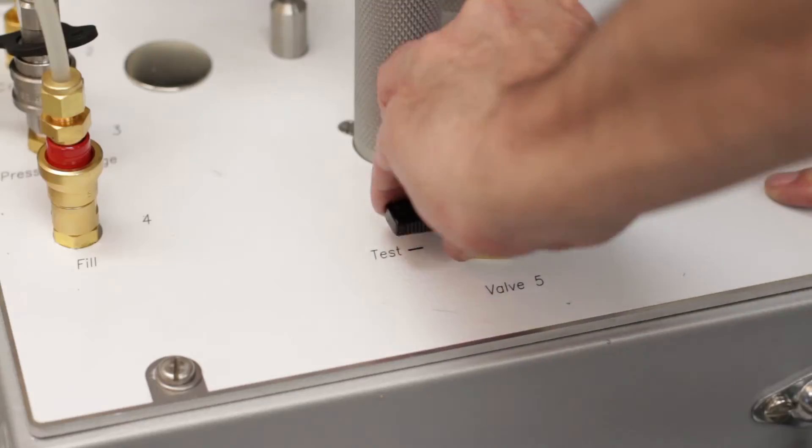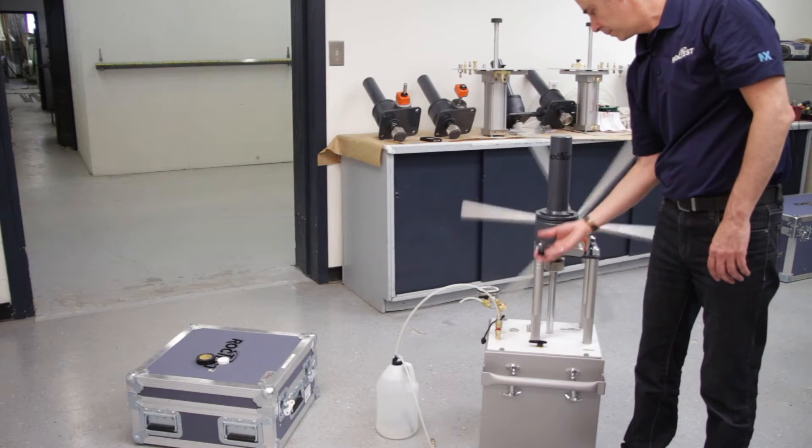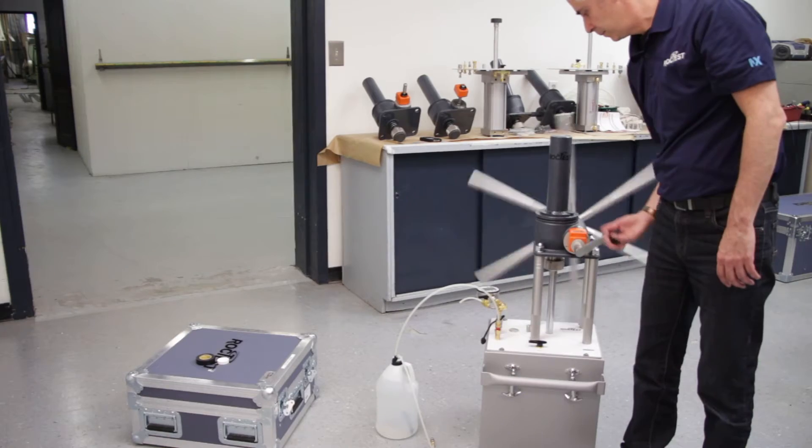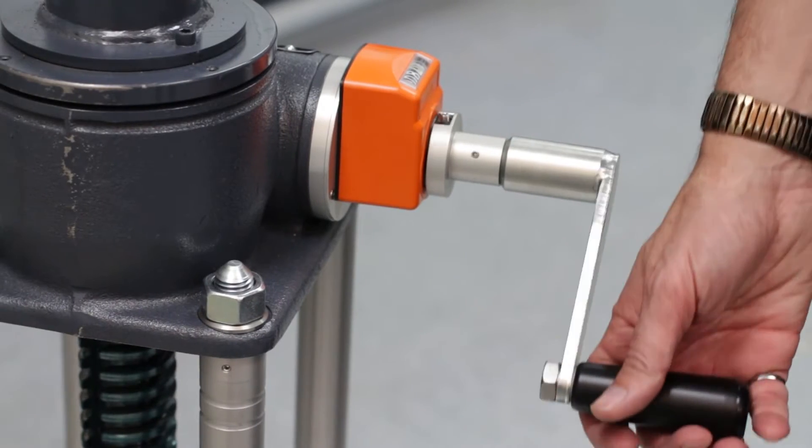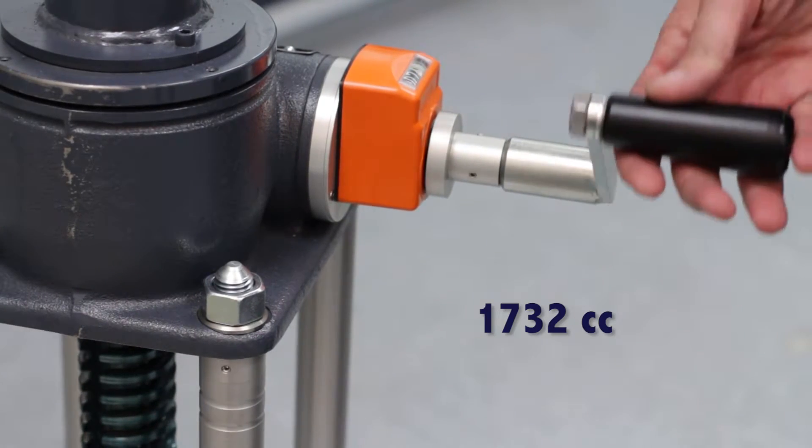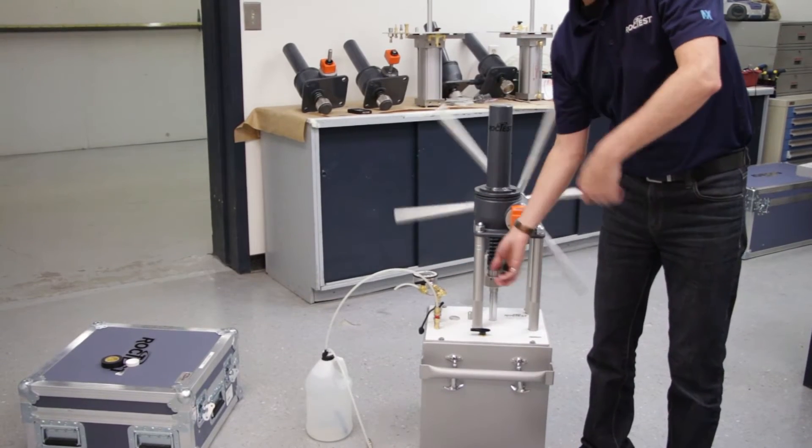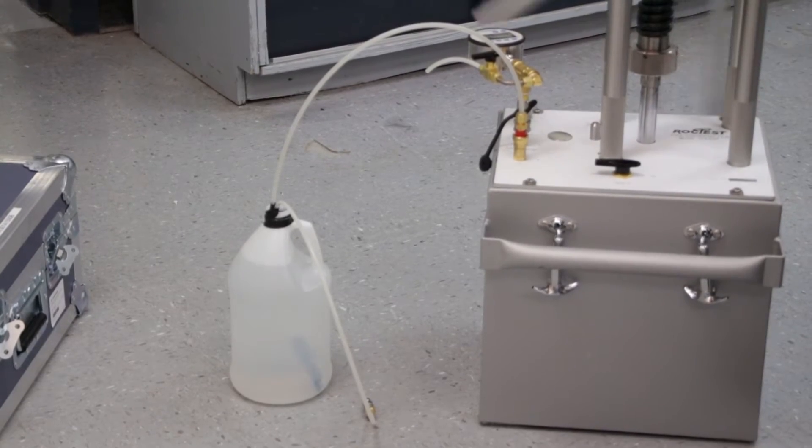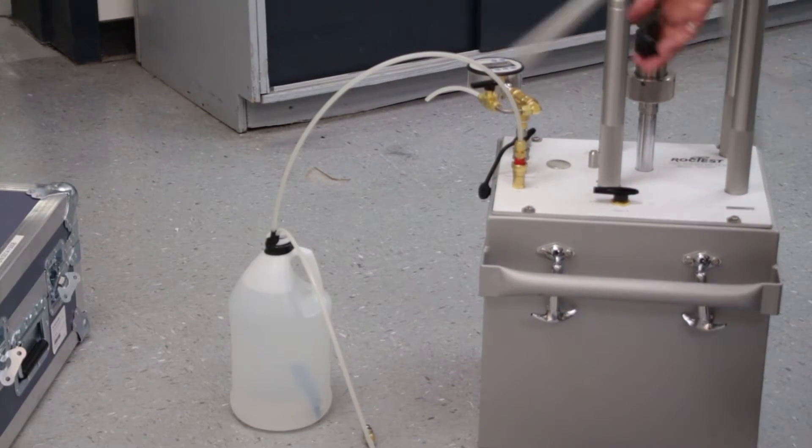Set the valve to fill. Turn the crank clockwise to bring the cylinder piston to its uppermost position. The counter should show 1732 cc. While the piston is rising, the air in the cylinder will come out from the tubing connected to port number four and you will see bubbles.